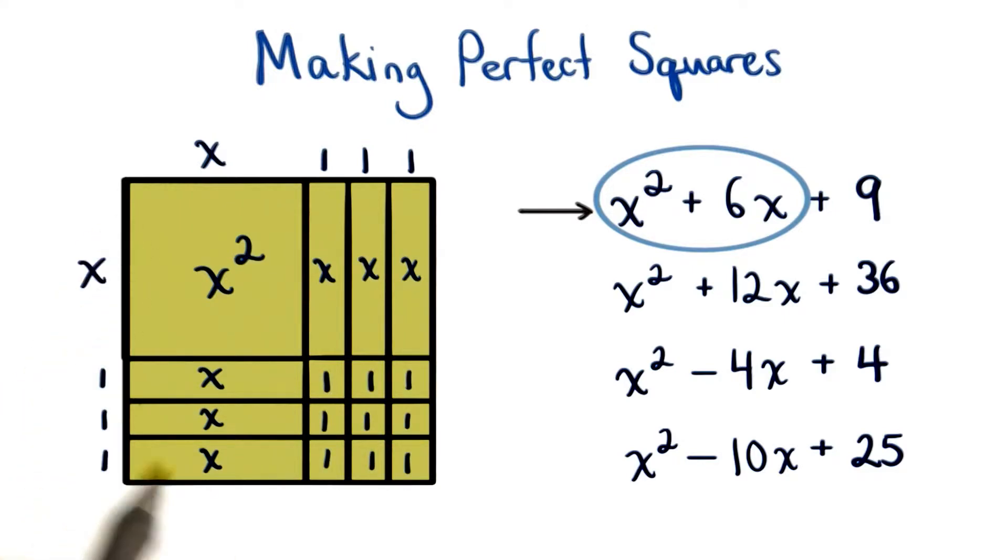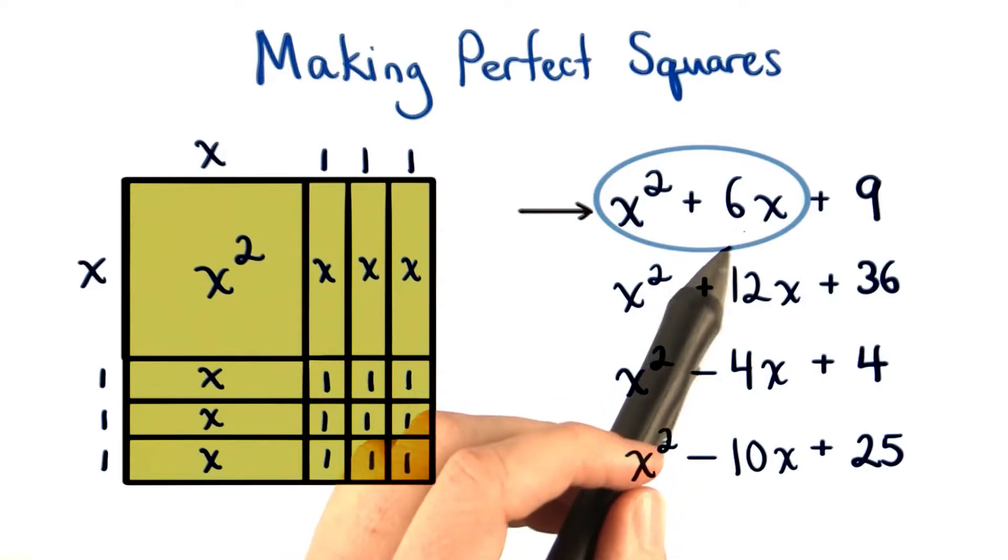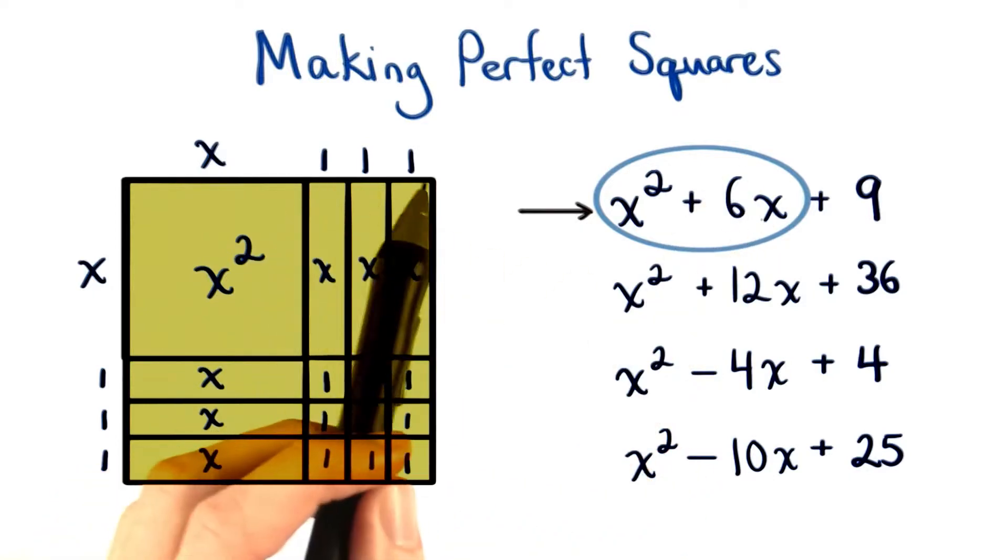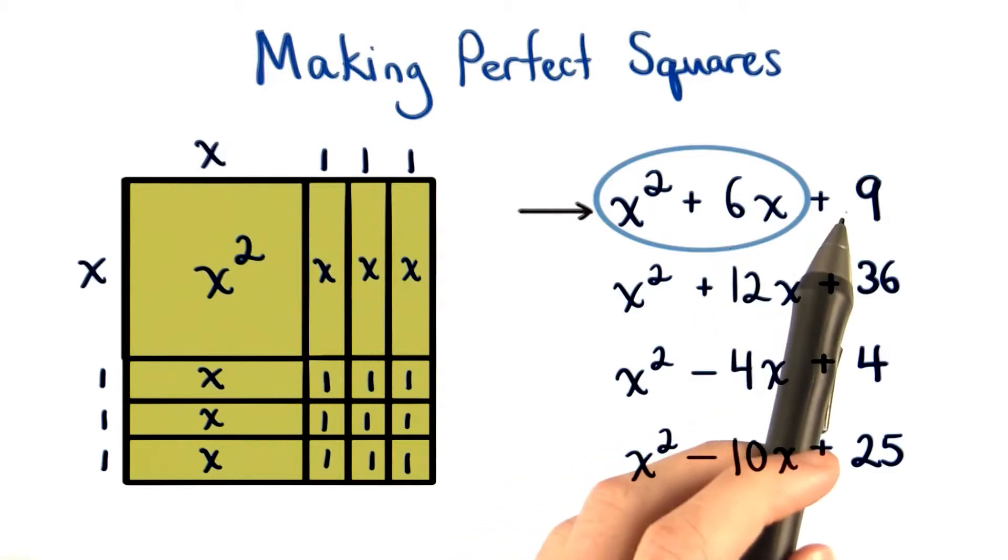So when thinking about completing the square, it's best if this b term is even. This allows us to split up the x's so we have half of them here, and half of them here, and then we can figure out how many one pieces we would need to add to complete our perfect square down here. For this first polynomial, it turned out that was 9.